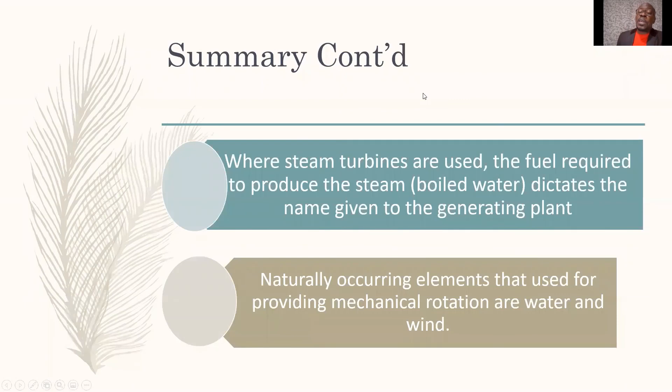Where steam turbines are used, the fuel required to produce the steam, or the boiled water, dictates the name given to the generating plant. And of course, naturally occurring elements that are used for providing mechanical rotation are water and wind. I thank you very much for your attention.